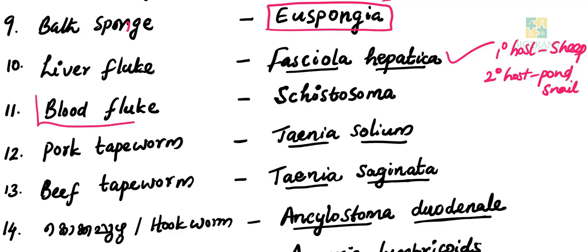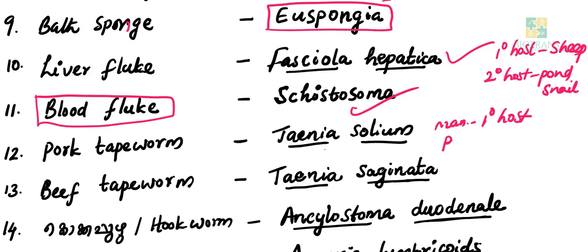Blood fluke is Schistosoma. Tapeworm is Taenia solium, a digenetic parasite with two hosts. Human beings are the primary host and the second host is pig — this is the Pork tapeworm. There is also Beef tapeworm.